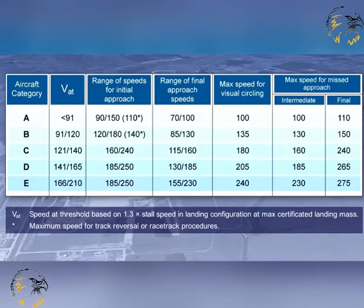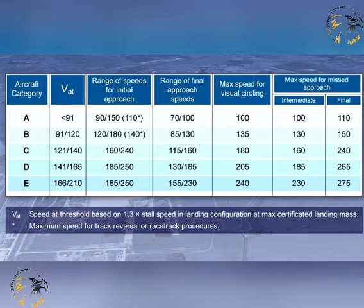Aeroplane performance has a direct effect on the airspace and visibility needed to perform the various manoeuvres associated with the conduct of instrument approach procedures. The most significant factor is aeroplane speed. Five categories of aeroplanes have been established based upon speed at threshold. VAT equals 1.3 times the stall speed in landing configuration at maximum certified landing mass. This provides a standard basis for relating aircraft manoeuvrability to specified instrument approach procedures.